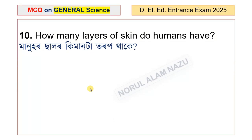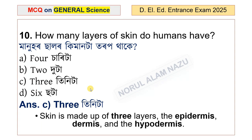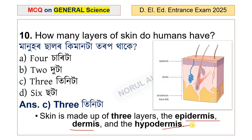Question number 10: How many layers of skin do humans have? There are 3 layers: the epidermis, the dermis, and the hypodermis.